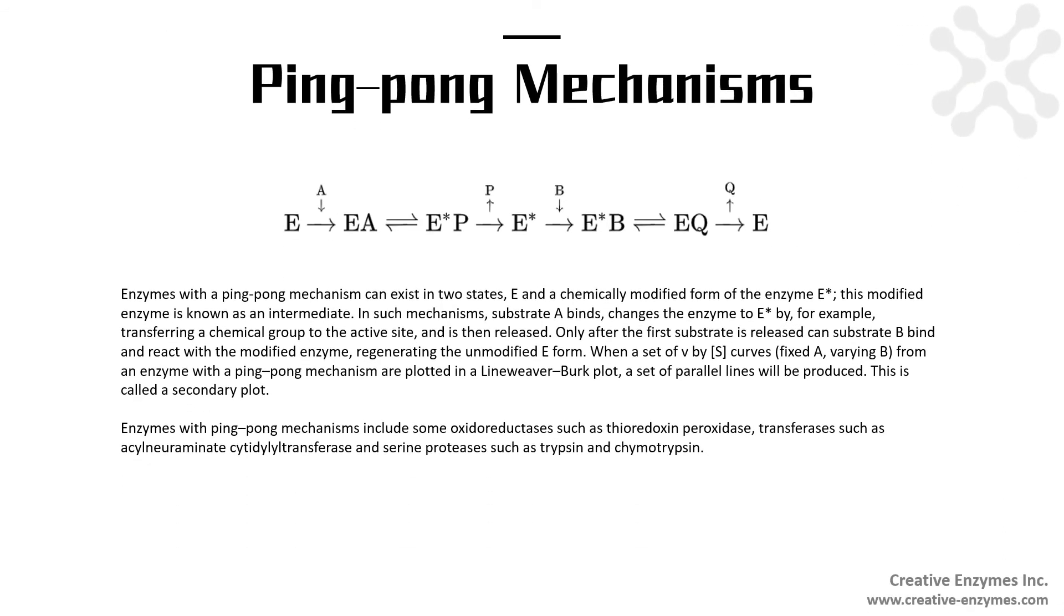Enzymes with a ping pong mechanism can exist in two states, E and the chemically modified form of the enzyme E asterisk. This modified enzyme is known as intermediate. In such mechanisms, substrate A binds, changes the enzyme to E asterisk by, for example, transferring a chemical group to the active site, and is then released. Only after the first substrate is released can substrate B bind and react with the modified enzyme, regenerating the unmodified E form.